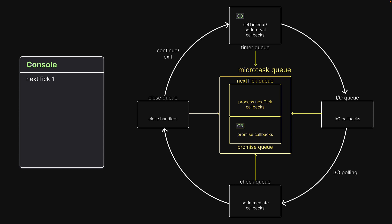First, the callback from the next tick queue is dequeued and executed, which logs a message to the console. Now that the next tick queue is empty, the event loop proceeds to the promise queue. The callback is dequeued and executed on the call stack, logging a message to the console. At this point, the promise queue is empty and the event loop proceeds to the timer queue. We have one callback which is dequeued and executed, resulting in the third log message. The event loop then proceeds to the IO queue, but this queue does not have any callbacks. It then proceeds to the IO polling phase. During this phase, the read file operation is complete, which pushes a callback function into the IO queue. The event loop then proceeds to the check queue and the close queue, which are both empty.